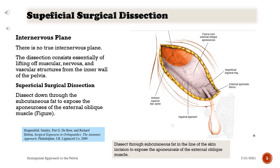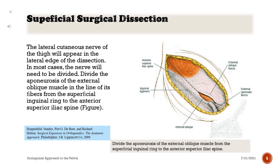Dissect through subcutaneous fat in the line of the skin incision to expose the aponeurosis of the external oblique muscle. The lateral cutaneous nerve of the thigh will appear at the lateral edge of the dissection. In most cases the nerve will need to be divided.